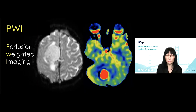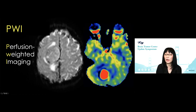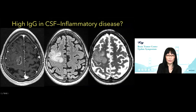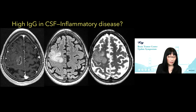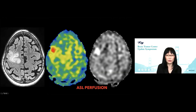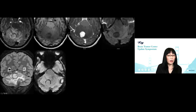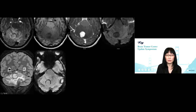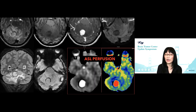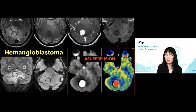Moving on to perfusion — we do two different types: the dynamic contrast enhanced, and also the non-contrast arterial spin labeling. Here's a patient who had inflammatory CSF and was thought to have some type of inflammatory process in the brain. But once you add ASL perfusion, this is a hypervascular solid mass — this is glioma. Here's another patient with a very solid enhancing cerebellar mass. DWI is not reduced, so this is not a cellular mass — clearly not medulloblastoma. But once you add perfusion, we know this is a highly vascular mass, and this is a hemangioblastoma.